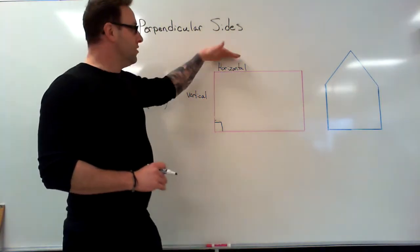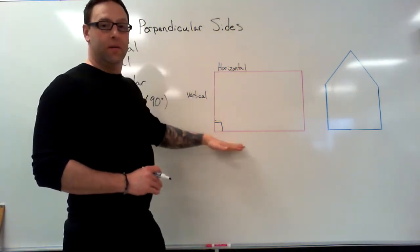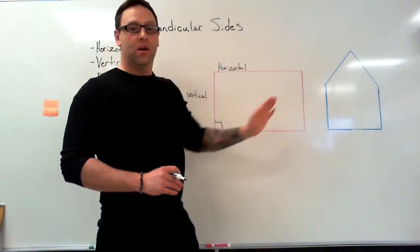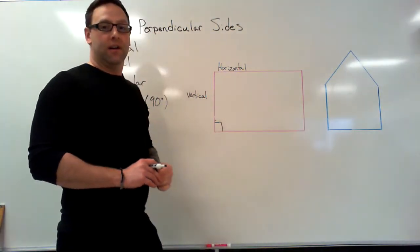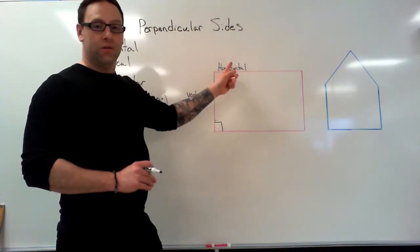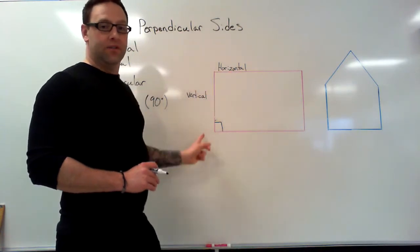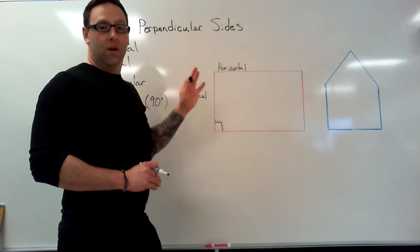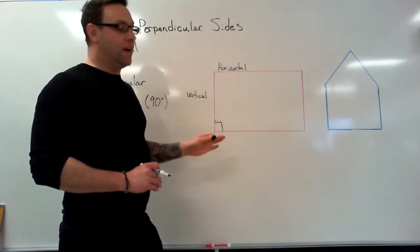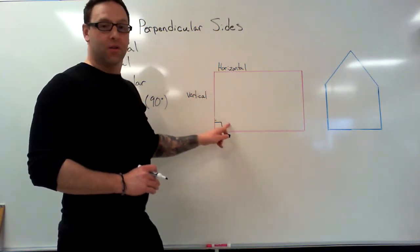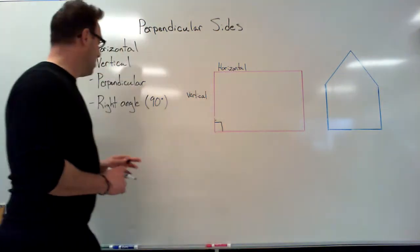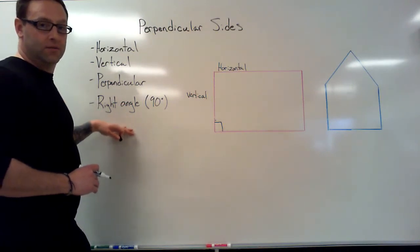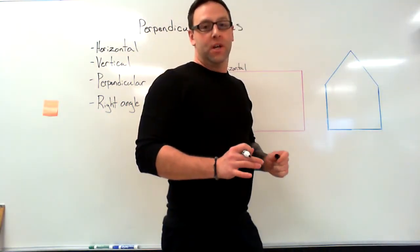To review: we've got a horizontal line on the top and bottom of our shape, and we've got a vertical line on either side. When a vertical line and a horizontal line intersect, we call those two lines perpendicular. We also say that is a square angle, and it's also known as a right angle.